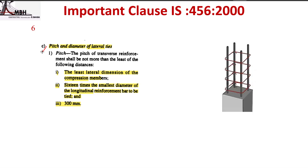The next clause covers transverse reinforcement in the form of lateral ties. The pitch of transverse reinforcement shall not be more than the least of the following distances. The first condition is the least lateral dimension of the compression member. For example, if the column size is 350 mm × 500 mm, the least lateral dimension is 350 mm.